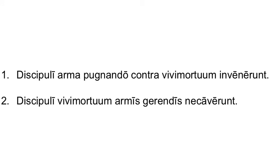The dramatic conclusion of our story! Discipuli arma pugnando contra vivi mortuum invenerunt. This sentence is a little more complicated. I see a prepositional phrase here. The direct object arma is the direct object of the main verb. The students found weapons for fighting against the zombie. Notice pugnando here is dative and does not have a direct object — it is a dative gerund, a verbal noun. Why did they find weapons? For fighting.